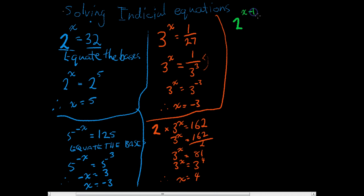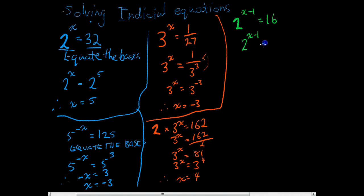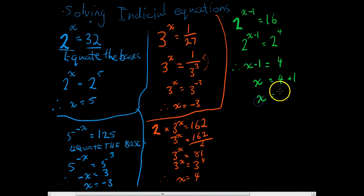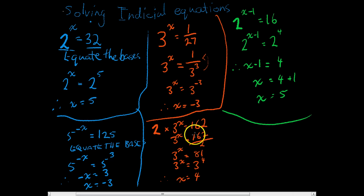Another example: 2 to the power of x minus 1 equals 16. Equate the bases — 2 to the power of x minus 1 equals 2 to the power of 4, which means x minus 1 equals 4. From there it's very simple algebra: x equals 5. That's solving indicial equations — five simple examples. Now it's time for you to give it a crack.